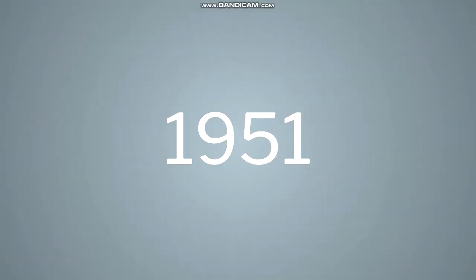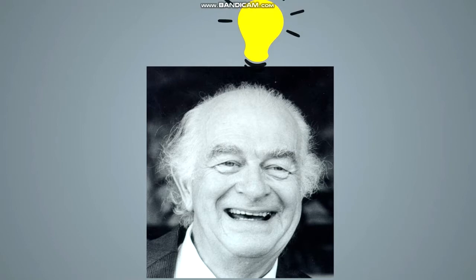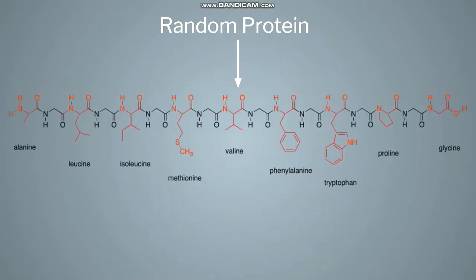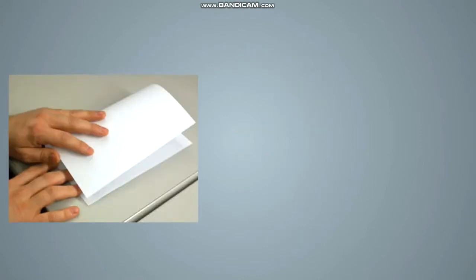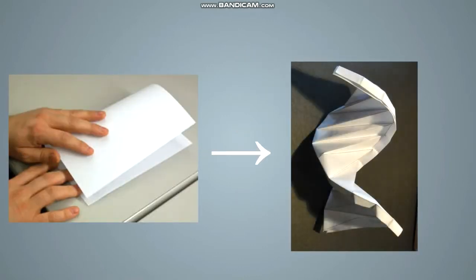One day in 1951, Linus Pauling was sick at home, and like many of us do, he pondered about the structure of proteins. He drew the amino acids of a random protein in a straight line, which is how they were previously theorized to be, and he noticed that the bond angles were not accurate to their VSEPR values. He began folding paper into shapes and different angles to try and achieve bond angles that were accurate to VSEPR.